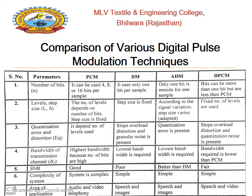For level or step size: in PCM, the number of levels depends on the number of bits and step size is fixed; in DM, step size is also fixed; in ADM, step size varies according to the slope of the modulating signal; in DPCM, a fixed number of levels are used. For quantization error and distortion: in PCM it depends on the number of levels; in DM, slope overload distortion and granular noise are present; in ADM, quantization error is present; in DPCM, slope overload distortion and quantization noise are present.